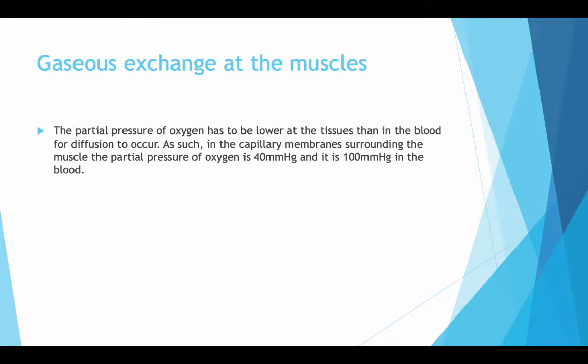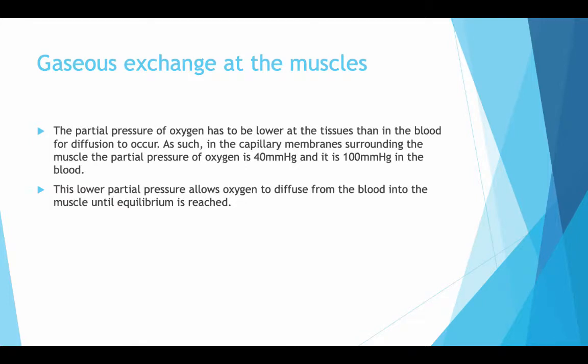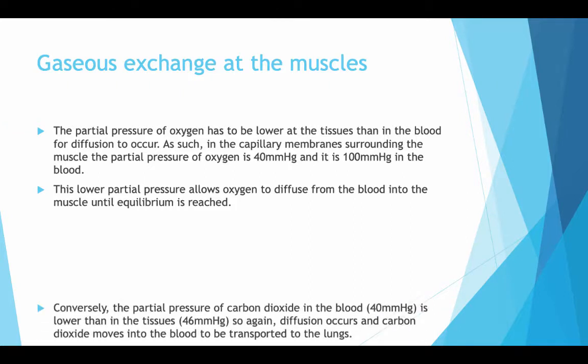Gas is exchanged at the muscles. The partial pressure of oxygen has to be lower at the tissue than in the blood for diffusion to occur. In the capillary membranes surrounding the muscle, the partial pressure of oxygen is 44 mmHg, and is 100 mmHg in the blood. The lower partial pressure allows oxygen to diffuse from the blood into the muscle until equilibrium is reached.